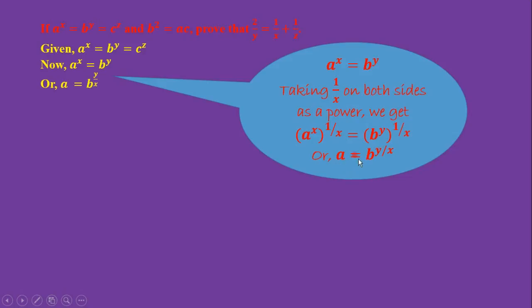So A = B^(y/x). Similarly, taking the last two terms: B^y = C^z.